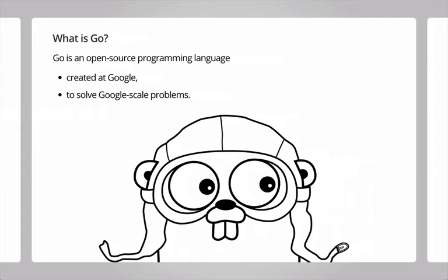Go is an open source programming language created at Google. It started in 2007 as a 20% project and was released as open source around 2009. Since then it evolved a lot, reaching a very important point in its history: Go 1.0, where we stabilized the API. Since then we haven't made incompatible changes, and that's going to be the case for a long time to come.